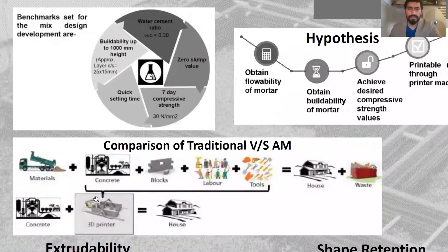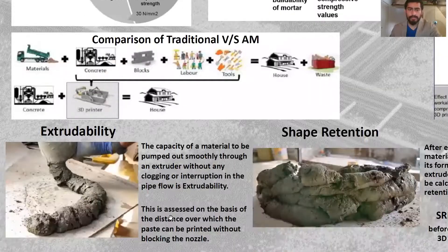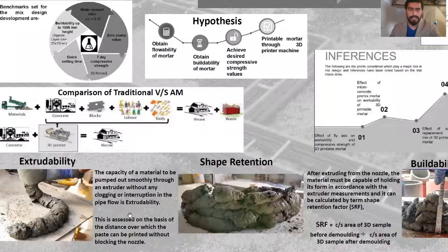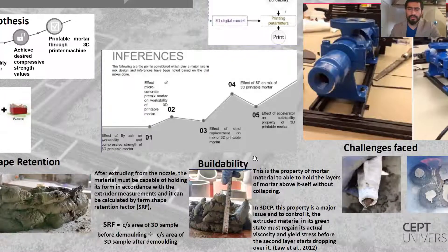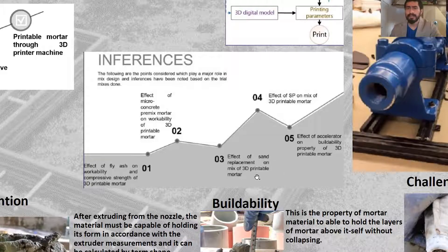As discussed, traditional concrete practices can be problematic, and with the help of the 3D printing system, four different parts can be consolidated into one single part — the process of 3D printing. These are photos of the properties I established and worked upon: extrudability, shape retention, and buildability. Several inferences were concluded, covering the properties of fly ash, concrete premix mortar, effect of sand replacement, and effect of SOPA blushes — these are the properties of fly ash or accelerators on the raw material.